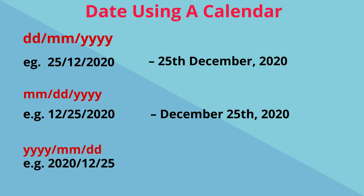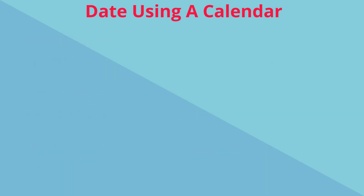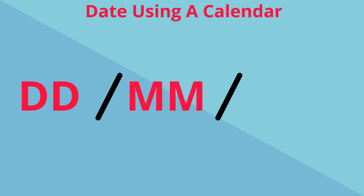We can also state the year first, then the month and then the day, or the day and then the month, and so on. The important thing to recognize is which is the date — meaning the actual number day of the month — which number represents the month, and which number represents the year.